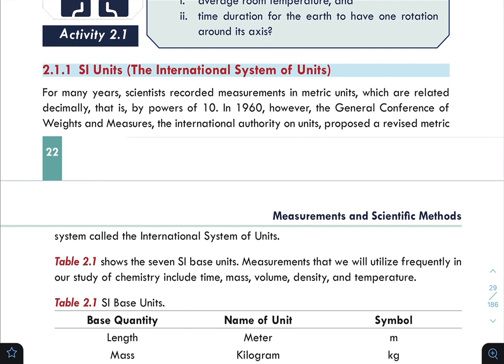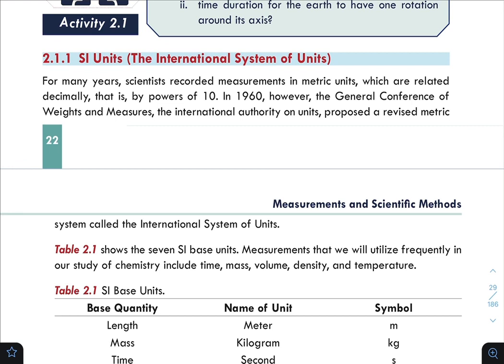In 1960, the General Conference of Weights and Measures, the international authority on units, proposed a revised metric system called the International System of Units. Scientists revised the metric system so measurements would be internationally standardized.